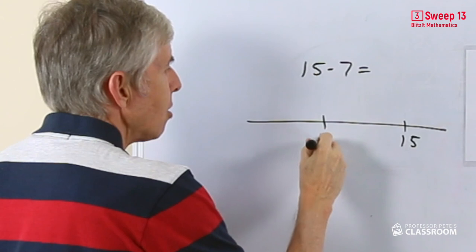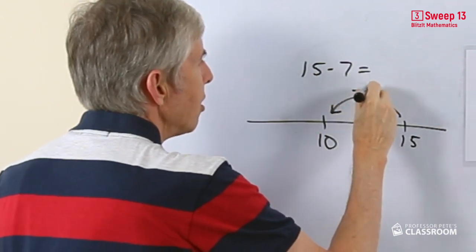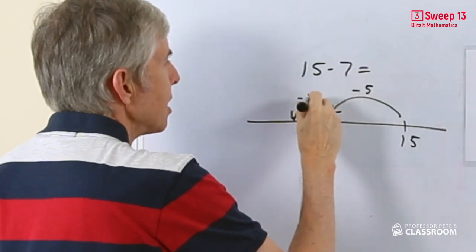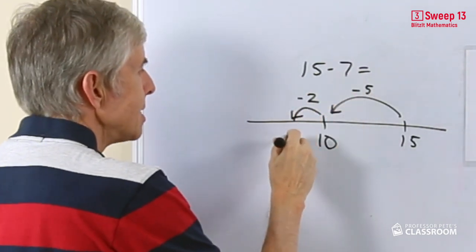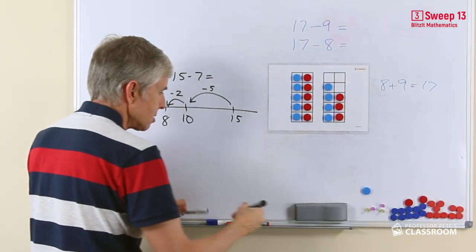So again we start at 15, we're going to go back to 10, and we'll say alright that's taking away 5. We need to take away another 2 because 2 and 5 make 7. 10 take away 2, of course that's going to be 8, and there is our answer.